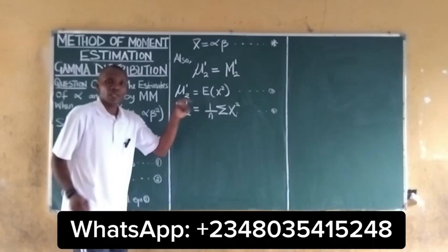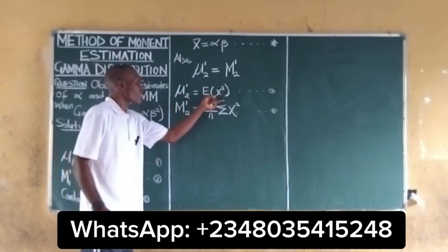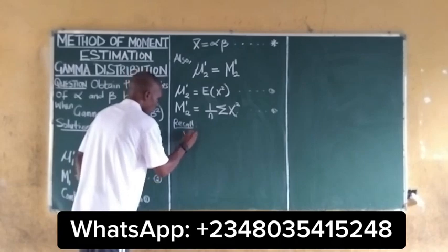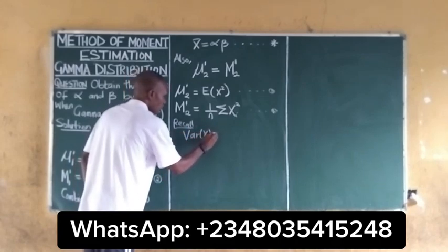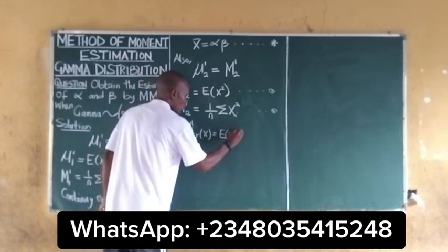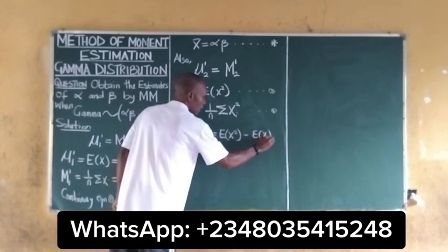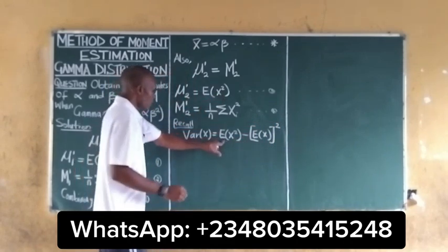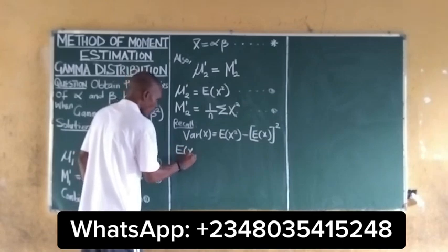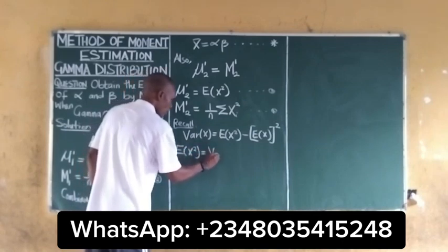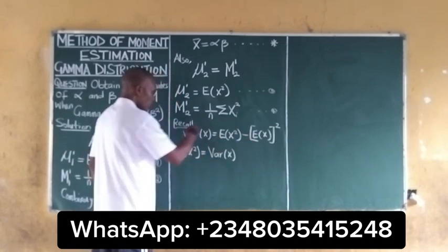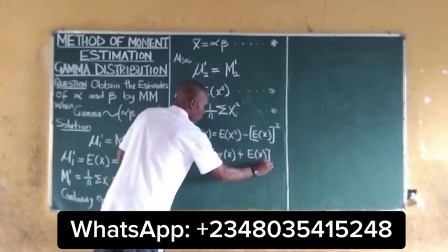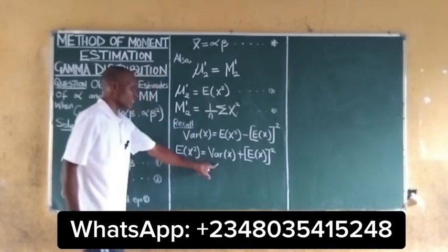Because it is very difficult to work with the expected value of X squared directly, we recall that the variance of X equals the expected value of X squared minus the expected value of X, all squared. We then make E[X²] the subject of the formula: E[X²] equals the variance of X plus (E[X])².